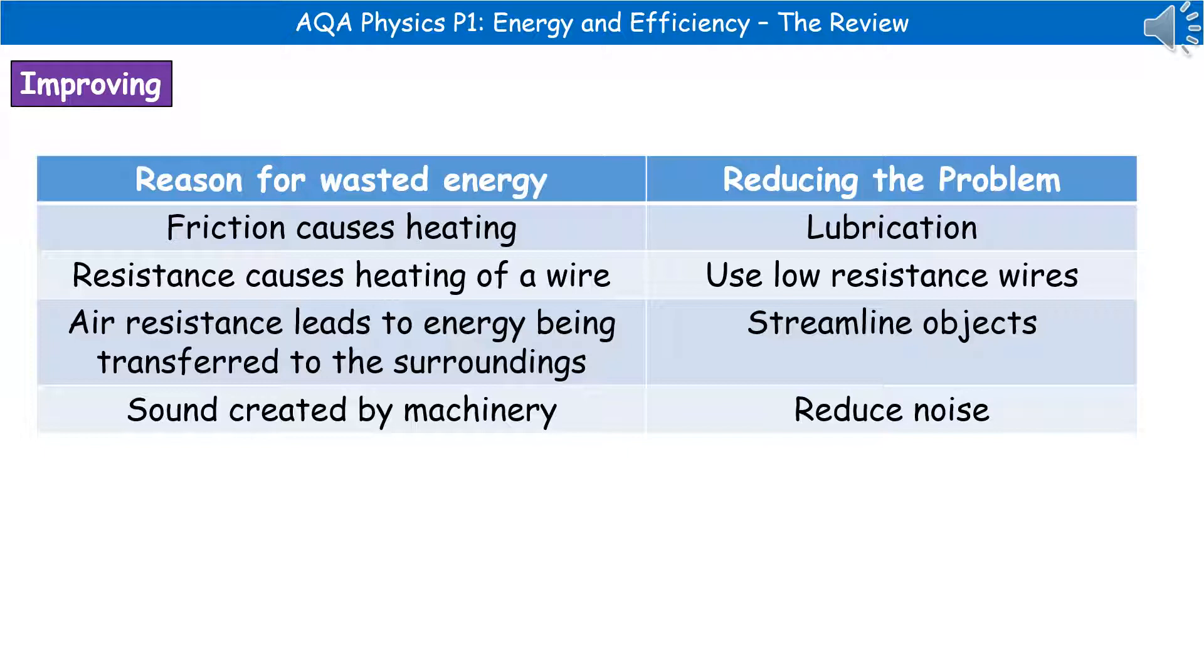If we've got something that is moving, then we've got air resistance, which transfers energy to the surroundings. The way we can reduce that is by streamlining the object, so they have less air resistance acting on them. And the last one is that when machinery is working, there is some kind of sound being created. So the way we can reduce the energy that's being wasted there is by finding ways to reduce the noise. So tighten anything that's wobbling around, for example.